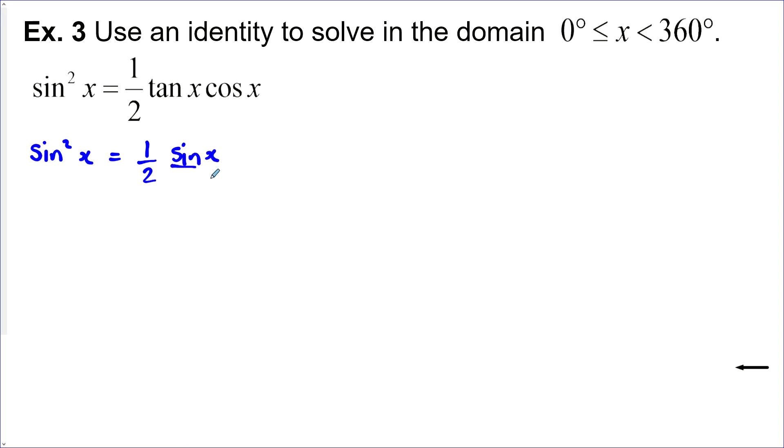Now on the right side here, we have cos x and cos x and they can cancel. Now we just have sine squared x on this side. Let's move everything to this side. And then let's factor out that sine x.